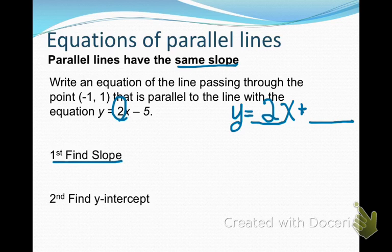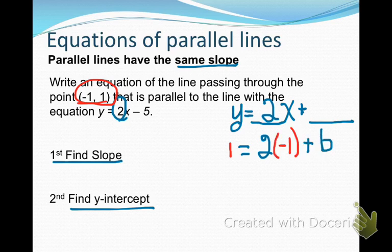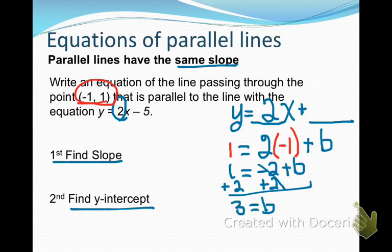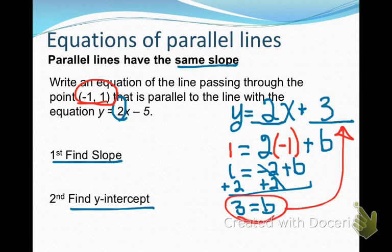So all I have to do now is find the y-intercept, and I'm going to use the same process as I did on the previous slide. I am going to replace the y and the x with this point, negative 1, 1. I'm going to put the 1 where the y is, use my slope of 2, put the negative 1 where the x is, and put plus b, simplify, solve, and I get that my y-intercept is 3. So the equation of the line that is parallel to y equals 2x minus 5 and goes through point negative 1, 1 is y equals 2x plus 3. You will be asked to do this on your test, so make sure you understand this process.